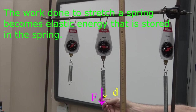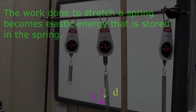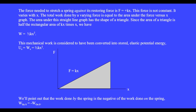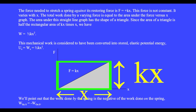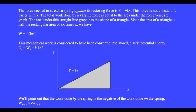The work done to stretch a spring becomes elastic energy stored in the spring. The force needed to stretch a spring against its restoring force is F equals plus kx. This force is not constant; it varies with x. The total work done by a varying force equals the area under the force versus x graph. The area under this straight-line graph is a triangle, with area one-half kx squared, giving work equals one-half kx squared. This is stored elastic potential energy U sub s equals one-half kx squared. The work done by the spring is the negative of the work done on the spring.